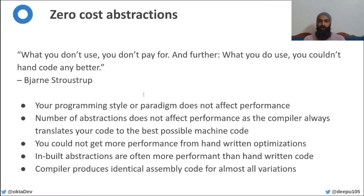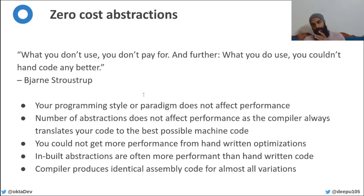In languages like Java, Go, C#, or Python when you encounter performance issues, you can hand-optimize by converting functional code to more imperative code — for example rewriting iterators to for-loops to increase performance. Some languages have compilers smart enough to convert some abstractions to more performant bytecode, but only languages like Rust and C++ offer true zero cost abstractions — meaning you can write code in whatever style and with whatever abstraction without worrying about performance cost.